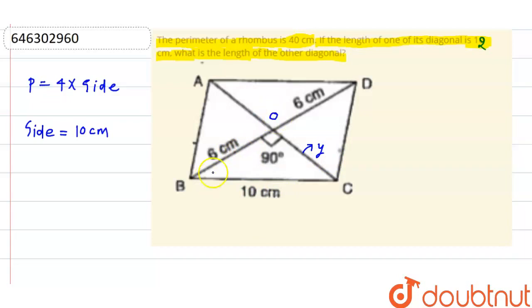Now, if you consider the triangle BOC, triangle BOC, you can observe that BC is the hypotenuse. BO is the base and OC is the height. So, I can apply the Pythagorean theorem.